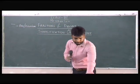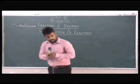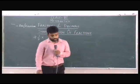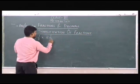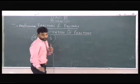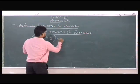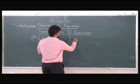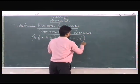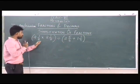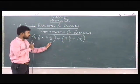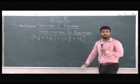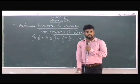We have: 9 and 1 by 3, into 2 and 1 by 7, divided by 2 and 5 by 6, plus 1 and 1 by 5. First, what we'll do is change the fractions into improper fractions.